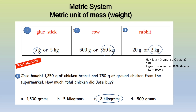How did you get two kilograms? You saw the clue word — how much total — so he added 1,250 plus 750, which gave him 2,000 grams. We know that 1,000 grams is equal to 1 kilogram, and 2,000 grams is equal to 2 kilograms. Excellent.